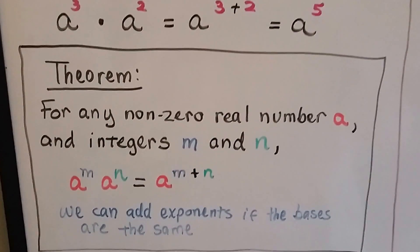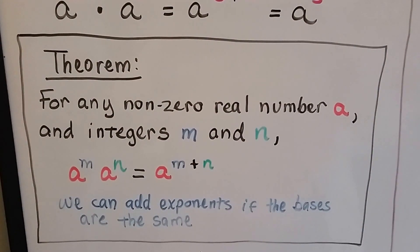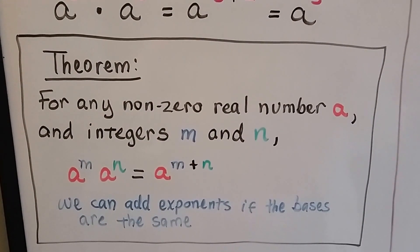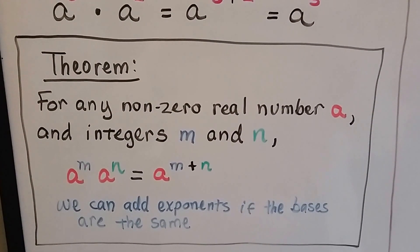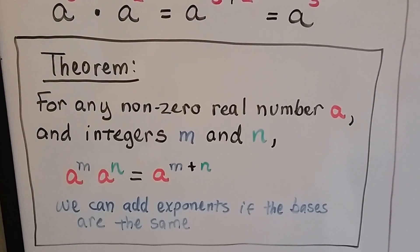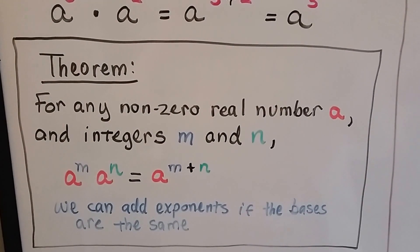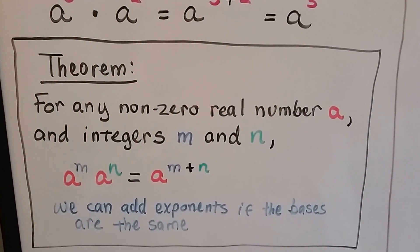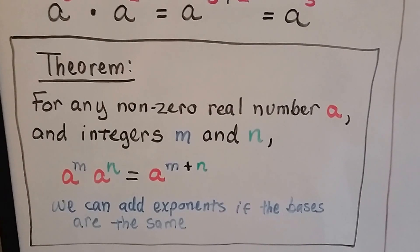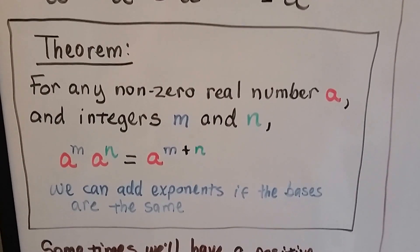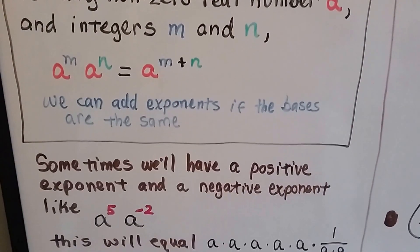Here's our first theorem: for any non-zero real number a and integers m and n, a to the m power times a to the n power equals a to the m plus n. We add the exponents if the bases are the same — they both have a for a base.